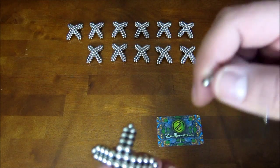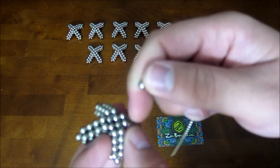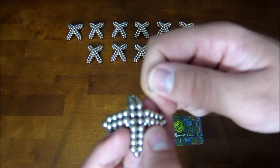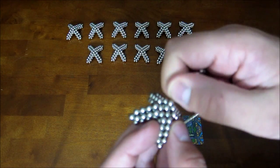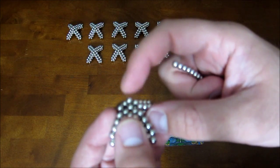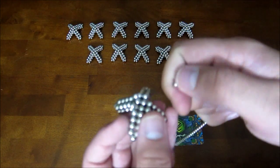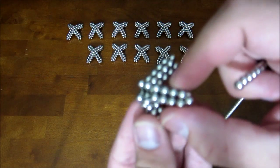And now you take four individual magnets and you add them in between each of the edges. Just the way that that one is right there. And you do that to all four corners until you end up with this.